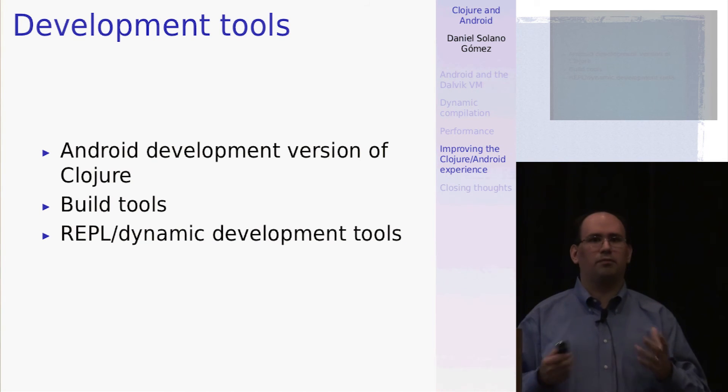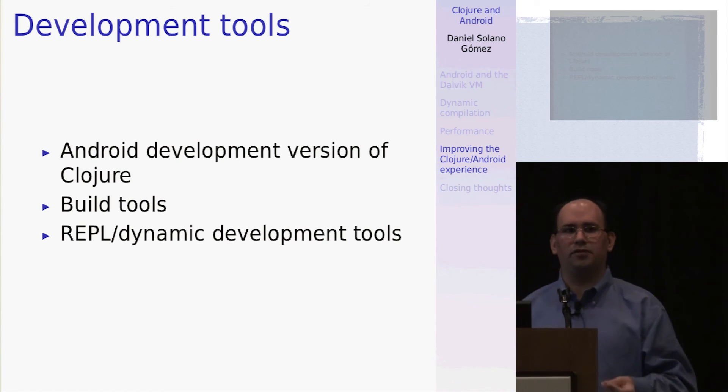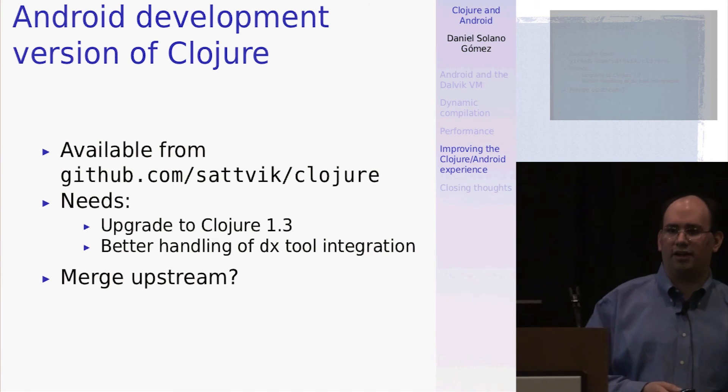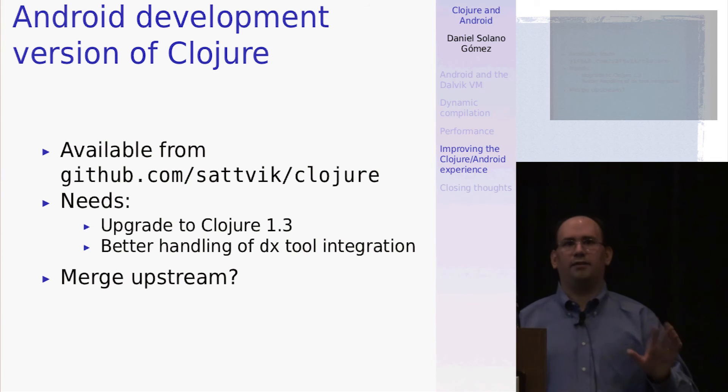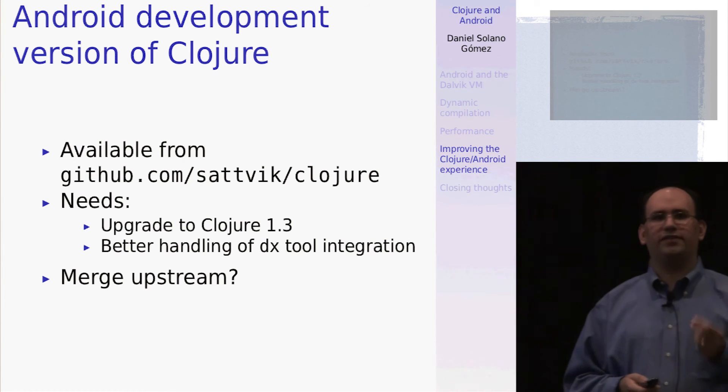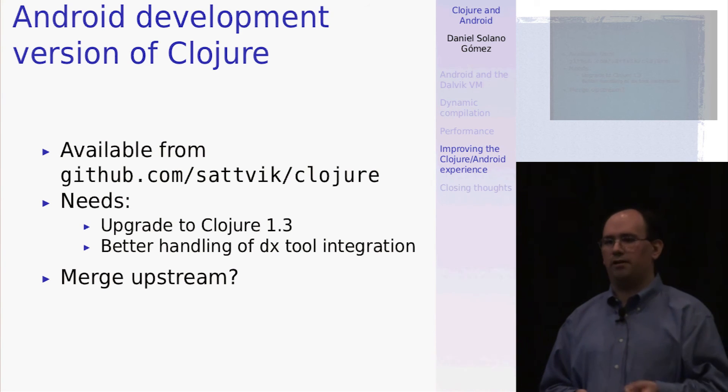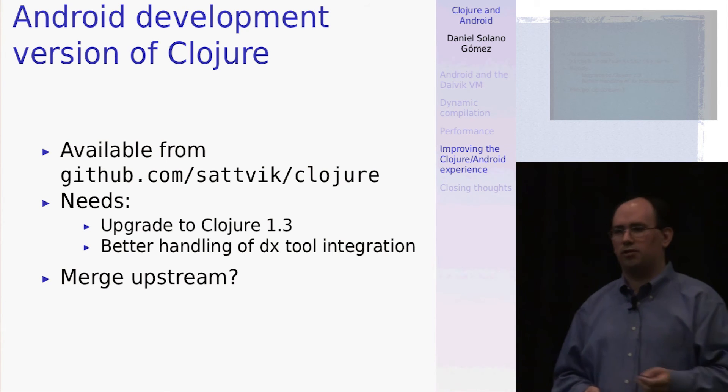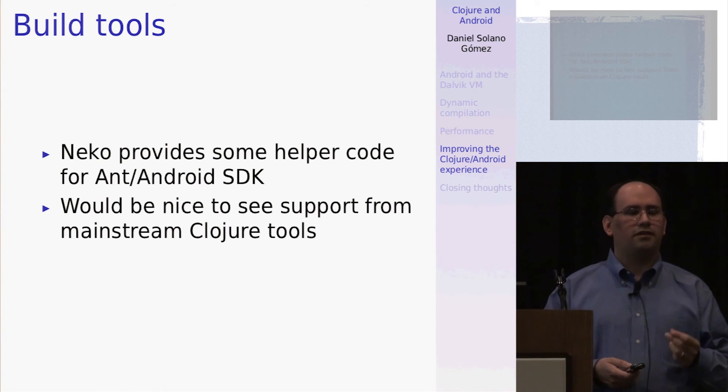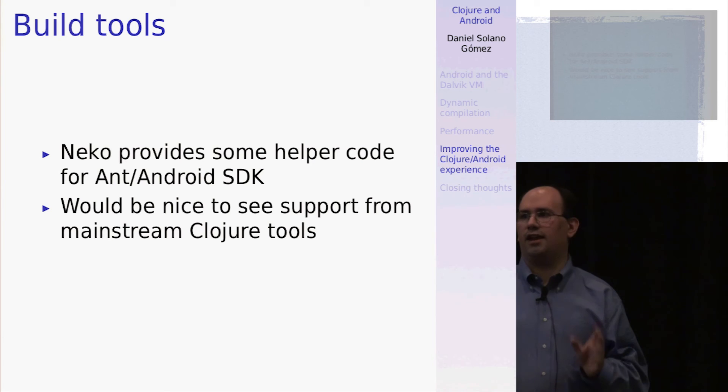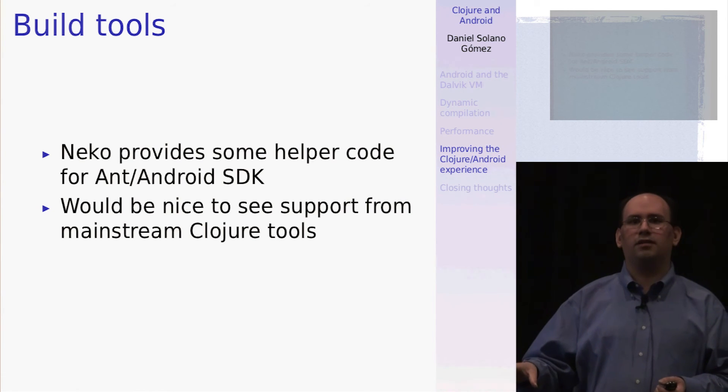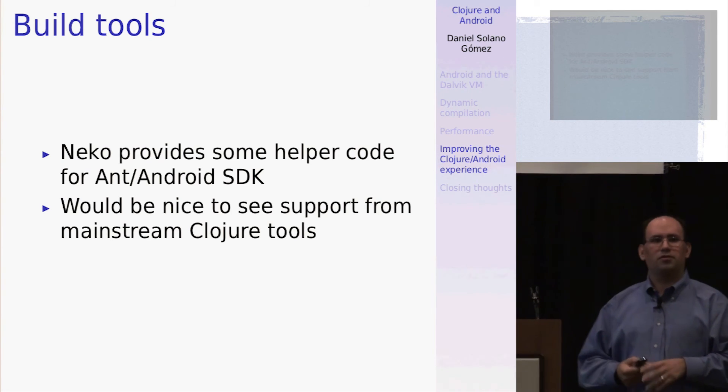So what kind of development tools can be improved, what kind of development tools would help us improve the development experience? One of which I kind of mentioned is a dynamic compilation version of Clojure, which is available on GitHub and has been for some time. Unfortunately, I haven't had the time to really care for it and update it to Clojure 1.3. And as I mentioned earlier, a better, more robust dependency on the DX jar would be better. And I would love for some of these changes to be integrated into the mainstream Clojure.